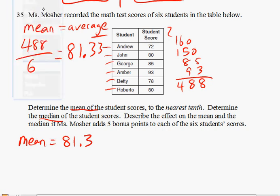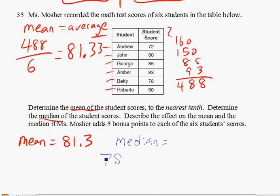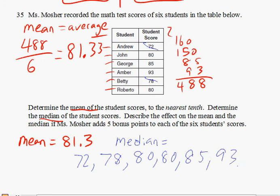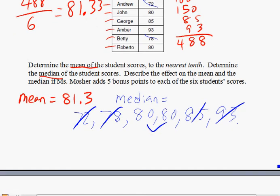Now let's find the median. For the median, put the numbers in order first, then start eliminating the lowest and the highest. The ordered list is: 72, 78, 80, 80, 85, and 93. Take out the lowest, take out the highest, keep going. We're down to the final two. The average of 80 and 80 is 80, so the median is 80.